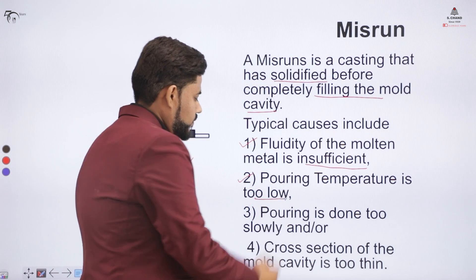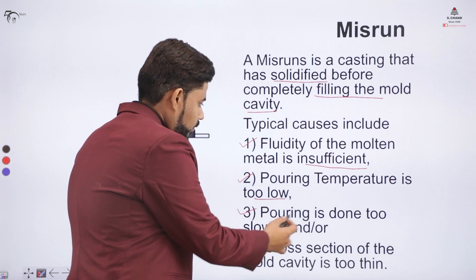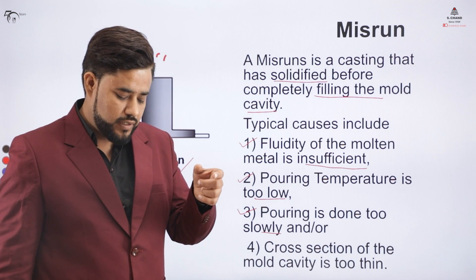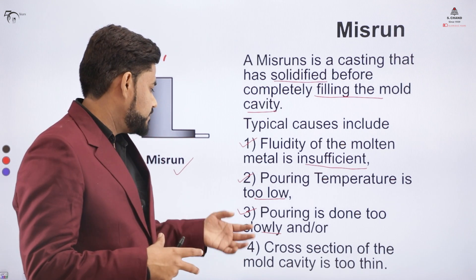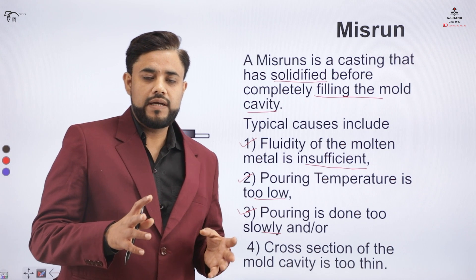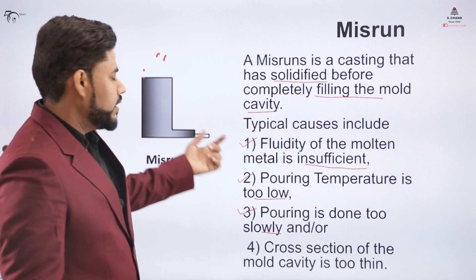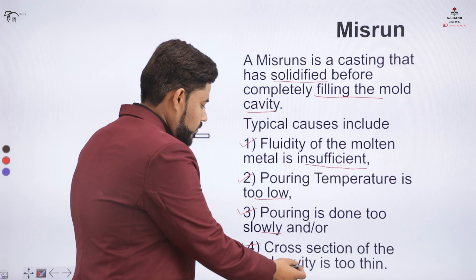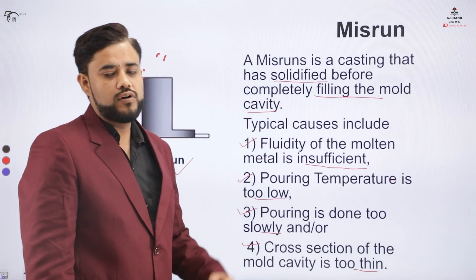Further causes of misrun: the pouring temperature is too low, causing rapid solidification; pouring is done too slowly — a proper pouring rate and time must be maintained so the cavity is fully filled before solidification; and the cross-section of the mold cavity is too thin, which also leads to a defective or faulty casting.